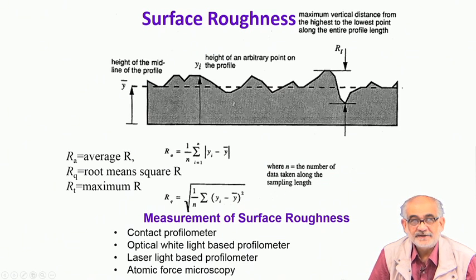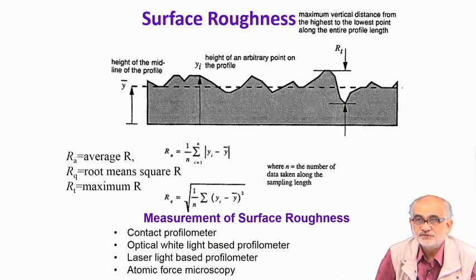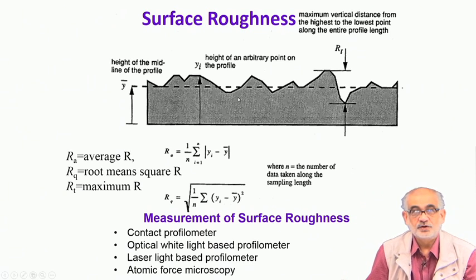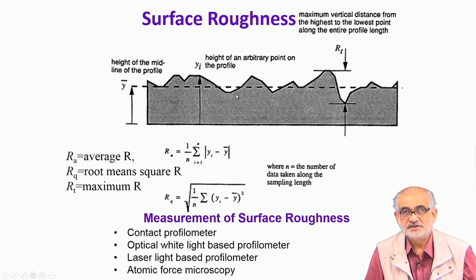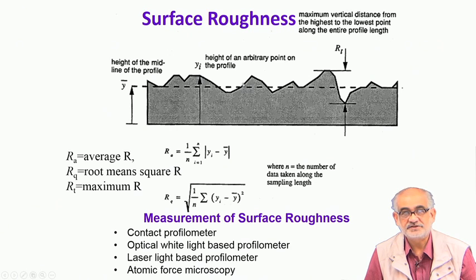Imagine a solid component which is freshly machined — when you machine it, the cutting tool moves over the surface and removes material by application of mechanical forces. Or think of a solid surface which is freshly ground through a grinding wheel or polished using certain abrasives; the grits on the grinding wheel or the abrasive particles, their size and geometry, leave such asperities onto the surface.